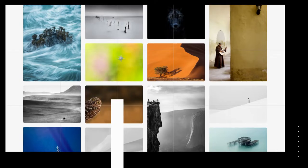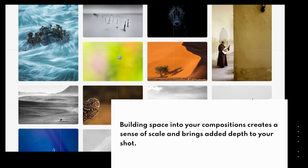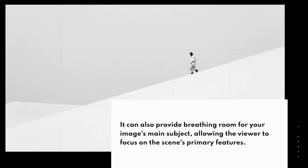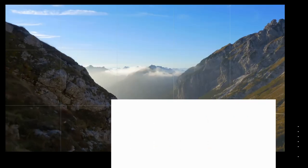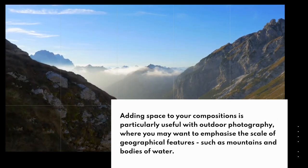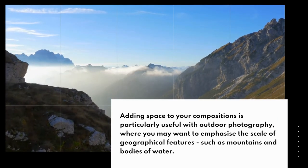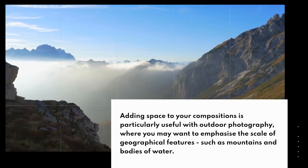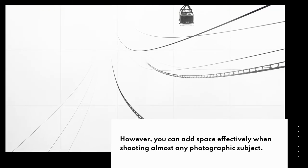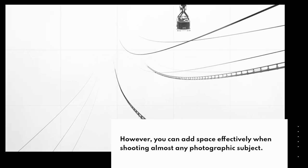Space. Building space into your compositions creates a sense of scale and brings added depth to your shot. It can also provide breathing room for your image's main subject, allowing the viewer to focus on the scene's primary features. Adding space is particularly useful with outdoor photography where you may want to emphasize the scale of geographical features, such as mountains and bodies of water. However, you can add space effectively when shooting almost any photographic subject.